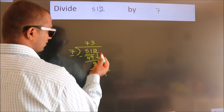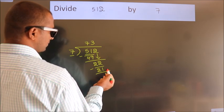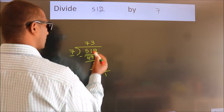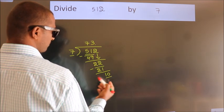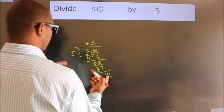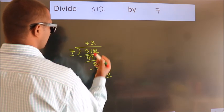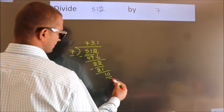After this, no more numbers to bring down. So what we do is, we put dot, take 0. So 10. A number close to 10 in the 7 table is 7 once, 7.